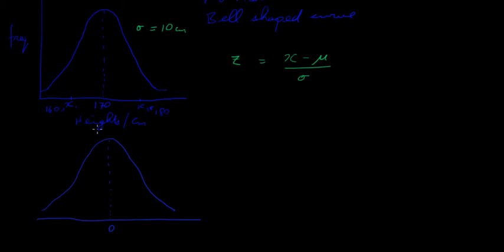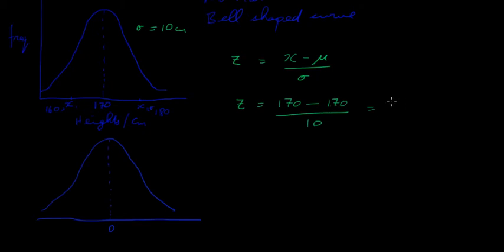To convert the mean itself — 170 cm — into a z value: z = (170 − 170) / 10 = 0/10 = 0. So 170 converts to a z value of zero. This means the x value is zero distance from the mean — it is the mean.